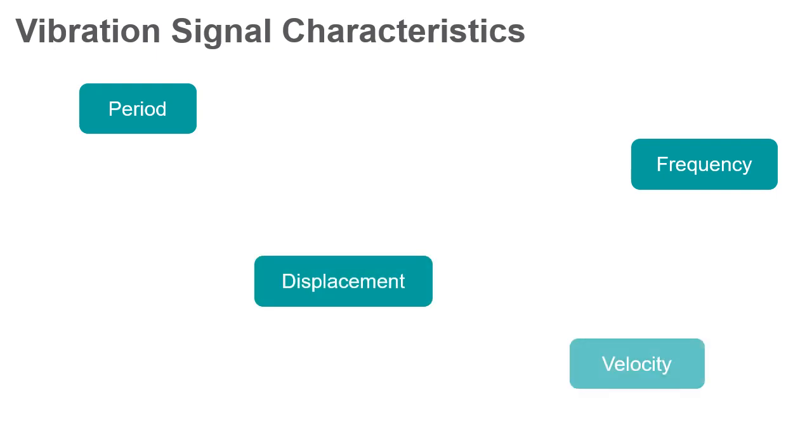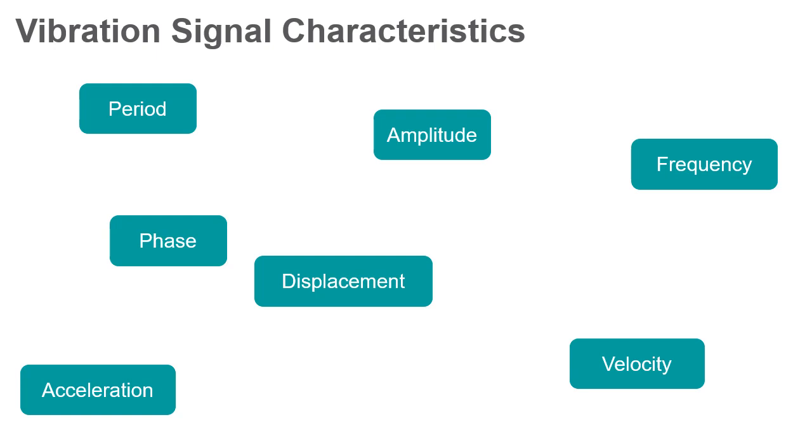Vibration signals have common characteristics, which include period, frequency, displacement, velocity, acceleration, amplitude, and phase.